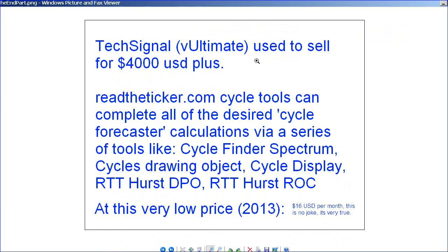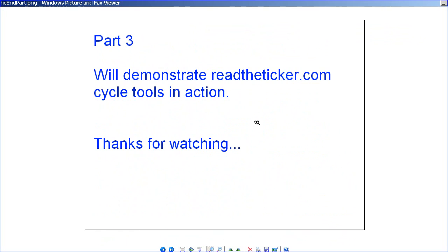The TechSignal Ultimate software package used to sell for $4,000 plus USD. ReadTheTicket.com has cycle tools that can do all the calculations that TechSignal does, through tools like Cycle Finder Spectrum, Cycle Drawing Object, Cycle Display, the Hurst DPO, and the Hurst ROC. Believe it or not, this is only $16 USD per month, as we are really trying to maintain low prices to make the site pay for itself.